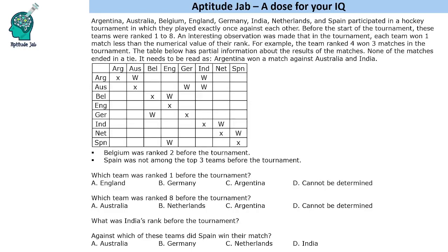Hello everyone. Welcome to Aptitude Jab. This is a set based on games and tournaments. There are 8 teams that participated in a hockey tournament and they played exactly once against each other. Before the start of the tournament, these teams were ranked 1 to 8, and an interesting observation was made that each team won 1 match less than the numerical value of their rank.